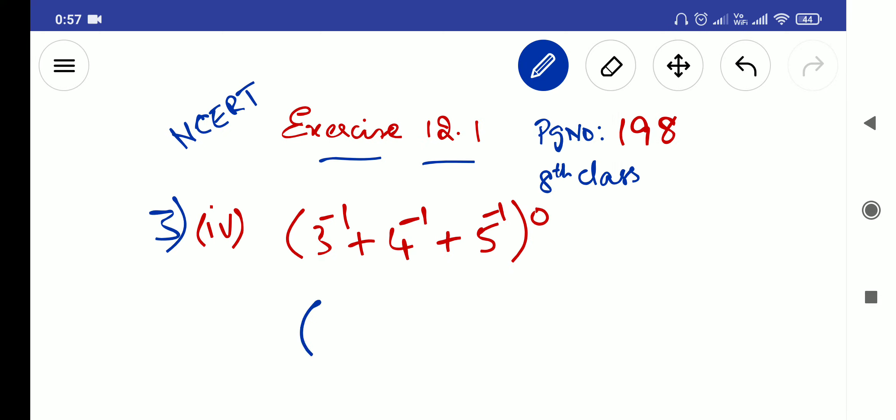3 power minus 1 is 1 by 3 power plus 1, so 3 power plus 1 is 3 only. This one becomes 4 power minus 1, which will be 1 by 4 power plus 1, so which is 1 by 4 only. I can remove that plus 1. So it will become 5 power plus 1, which I can remove that plus 1 because 5 power 1 or 5 is both are same.